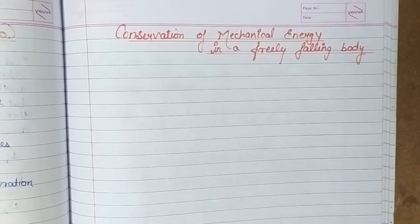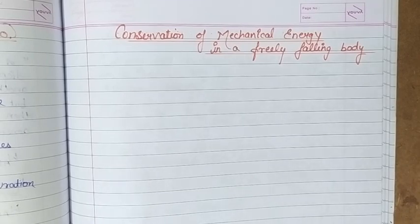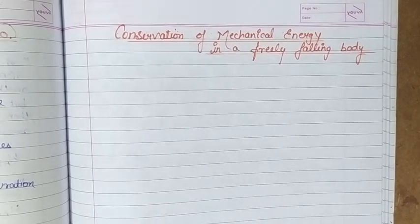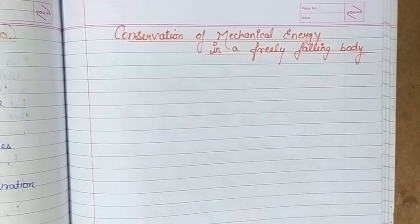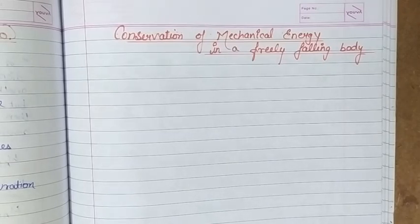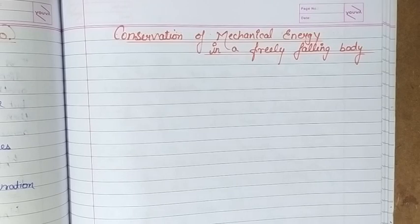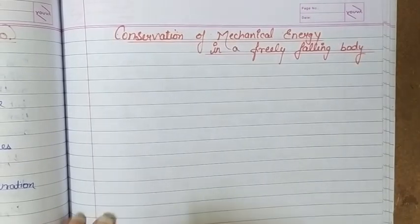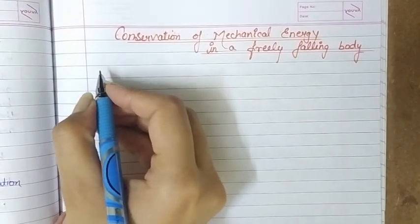Hello students. In this video we are going to prove that the total mechanical energy of a freely falling body remains constant throughout its fall. If a body is freely falling, then throughout its fall its mechanical energy remains constant — that is what we are going to prove in this video. For that, we are assuming there is a body of mass m lying at some position at a height h above the ground.